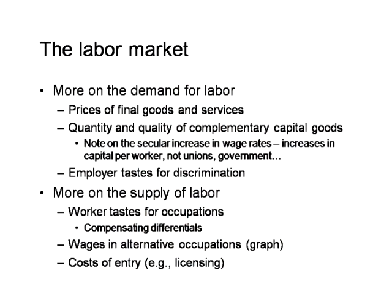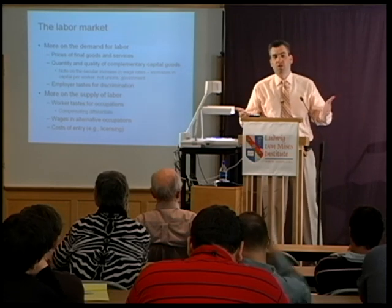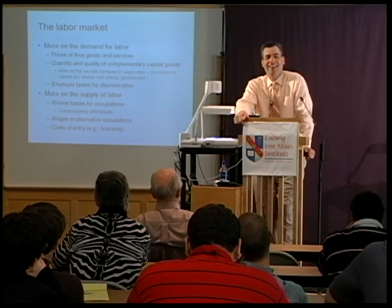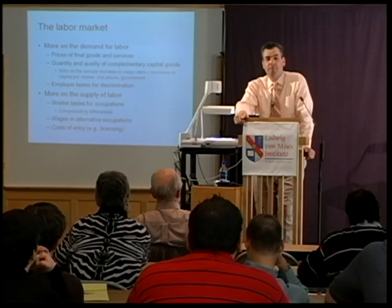The wages in alternative occupations affect the supply of labor — like my professor wage example. If my next best opportunity is as a security guard and wages for security guards were to increase substantially, I might substitute out of the labor market for professors. There could also be both private and governmental restrictions on entry into labor markets that affect equilibrium wages. There's a whole literature on occupational licensing that explains how licensing boards with government assistance are able to restrict the supply of labor into particular occupations — a kind of cartelization effect to increase the price.